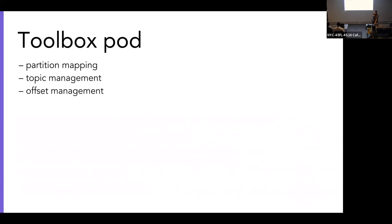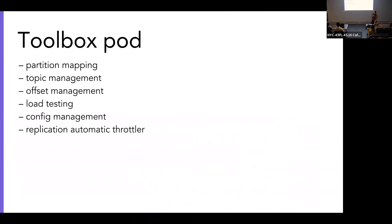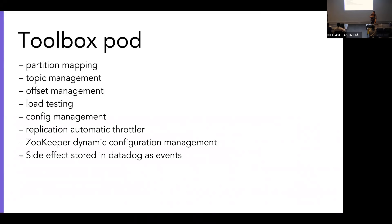In the toolbox we have: Topic Mapper, scripts to look at and interact with topic configurations, native Kafka tools and Python/Go scripts to manage consumer offsets, a load testing tool by Jamie called Sangonel, config management for topics, the Auto Throttle tool, and scripts for Zookeeper dynamic configuration management. Every script or tool that has a side effect on the cluster — like setting topic retention or config — sends an event to DataDog so we have an audit trail in our dashboards.